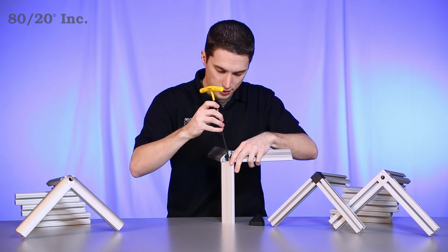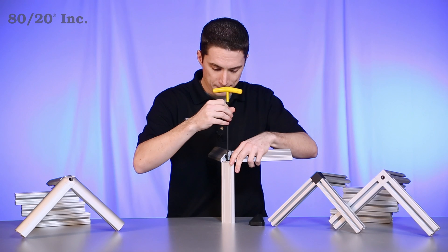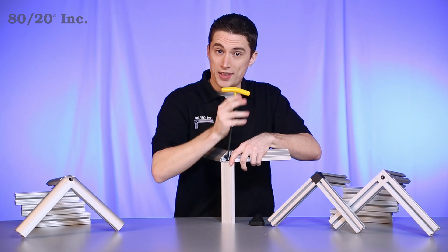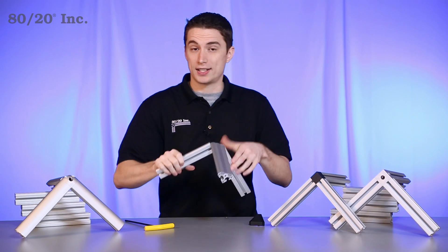We'll take our wrench and tighten it the rest of the way down. Once you have that locked in, you have one bracket connecting three bars.